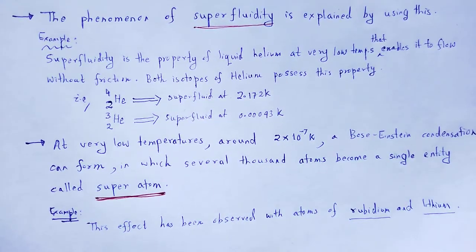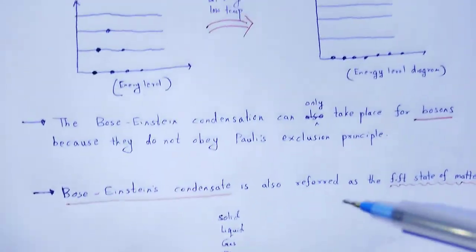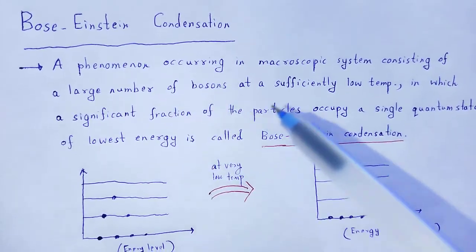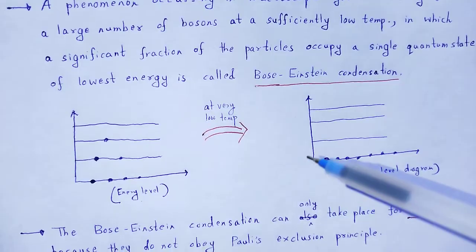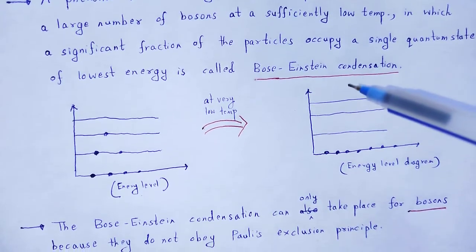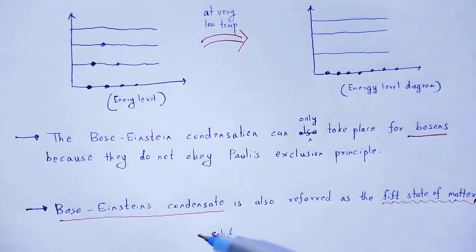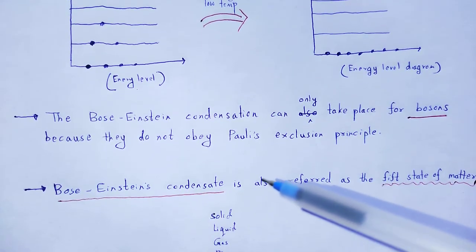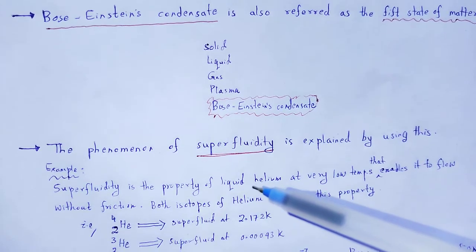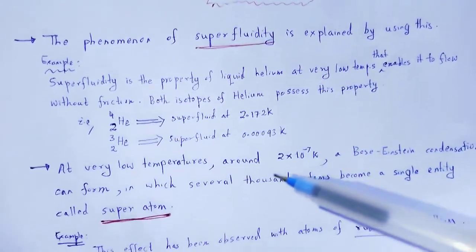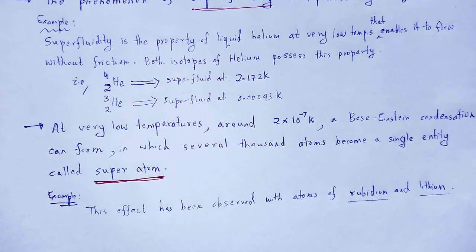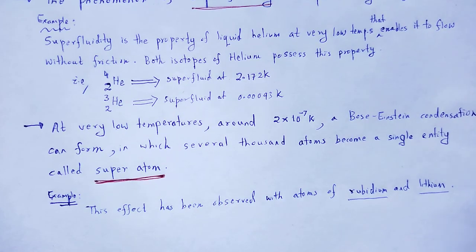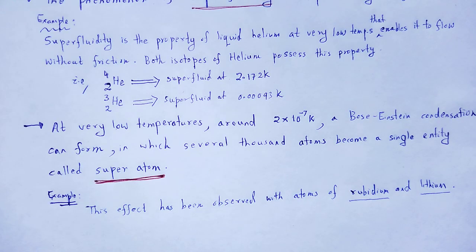So with the help of this video lecture, we understand the concept of Bose-Einstein condensation — what it is, the mechanism behind it, the fifth state of matter called Bose-Einstein condensate, the phenomenon of superfluidity, and the concept of super atom — all explained using Bose-Einstein condensation. Thank you.